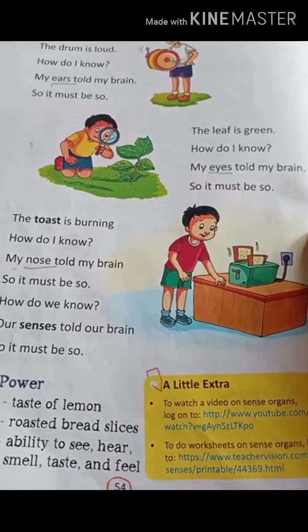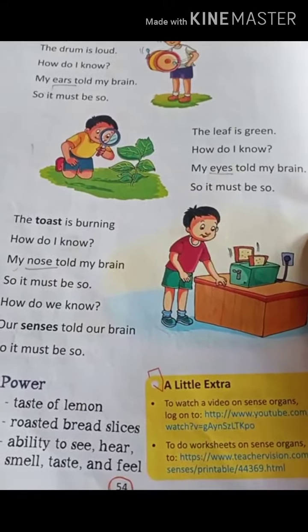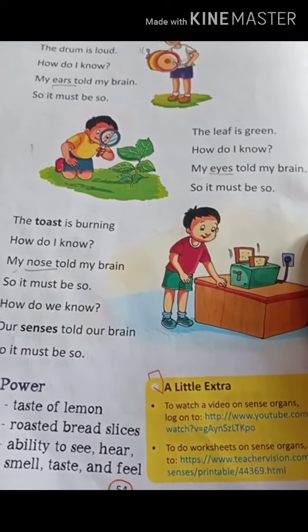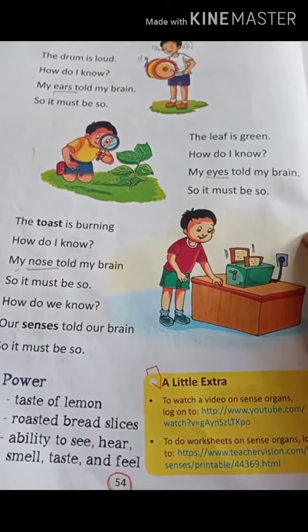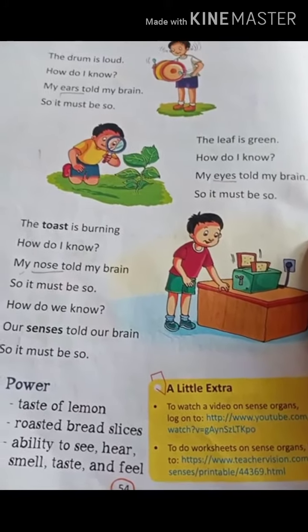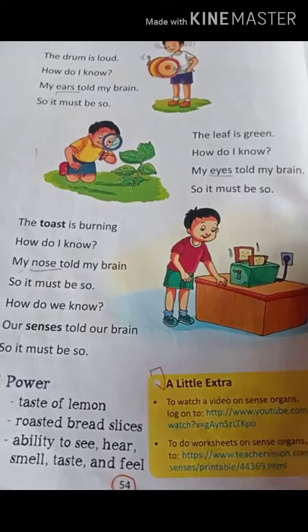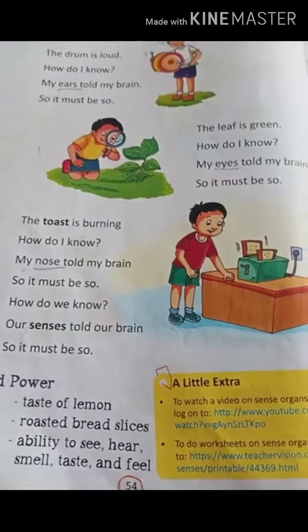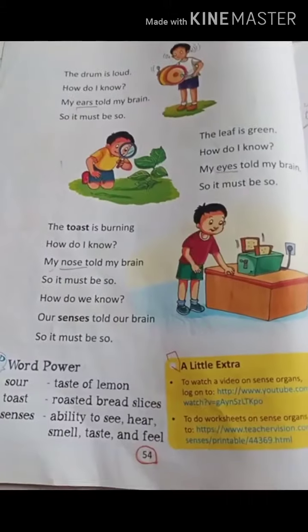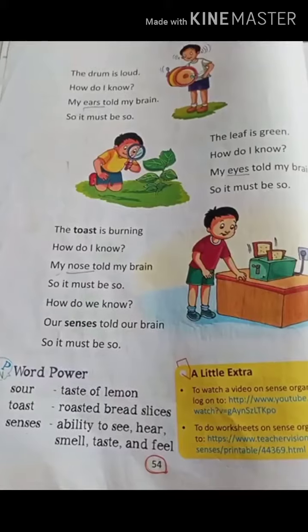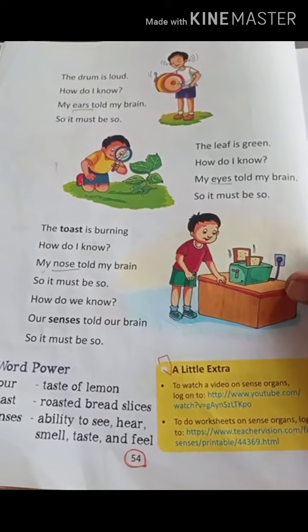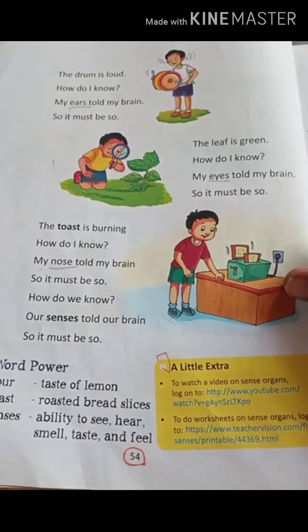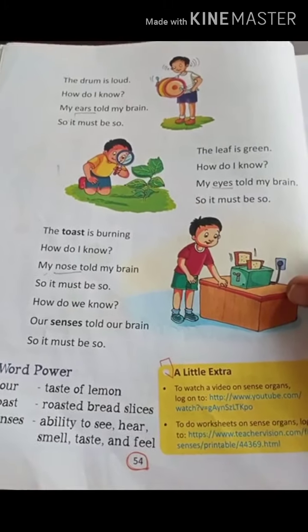The leaf is green. How do I know? My eyes told my brain, so it must be so. The leaf is green. How do you know? The eyes told your brain, so it must be so. The leaf is green.